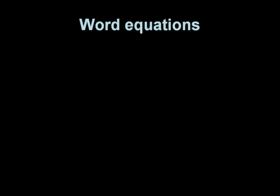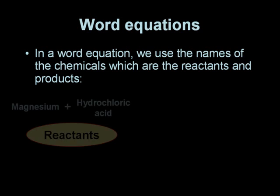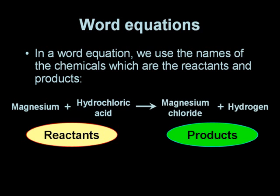Word equations are used as the simplest way of representing what happens in a chemical reaction. We write down the names of the chemicals which are the reactants and the products. In the case of the reaction we saw in the test tube, we had magnesium and hydrochloric acid as the reactants. The products that were formed were magnesium chloride and hydrogen.